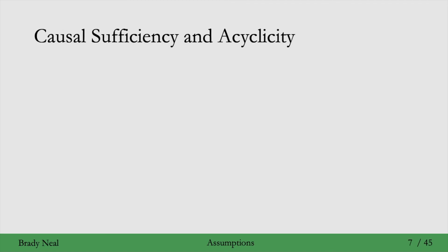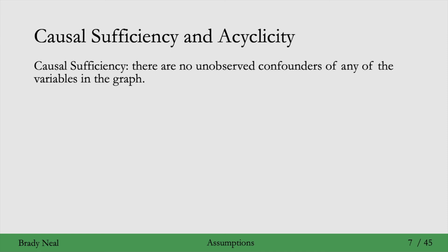And then the other two assumptions are much more familiar. The first one, causal sufficiency, is just a way of saying that there's no unobserved confounders of any of the variables in the graph. And the second one, acyclicity is just what we've been doing throughout this course. The graphs are acyclic.